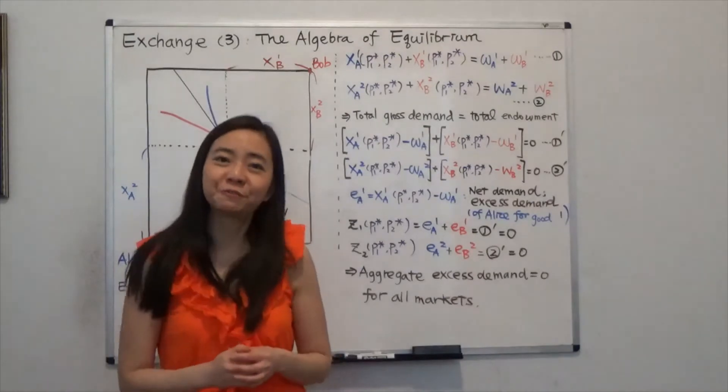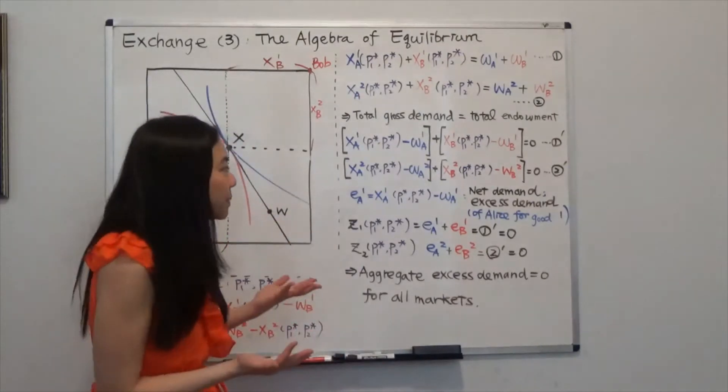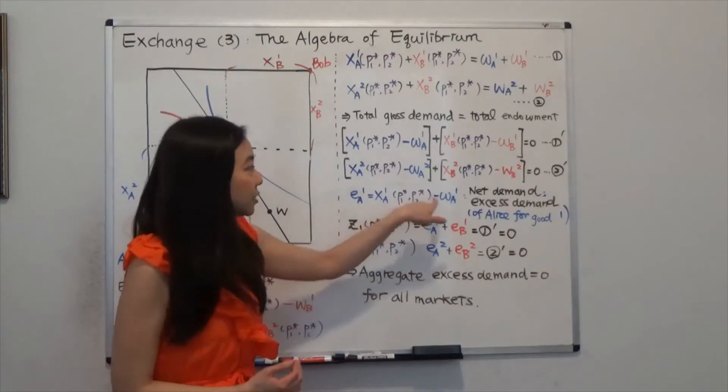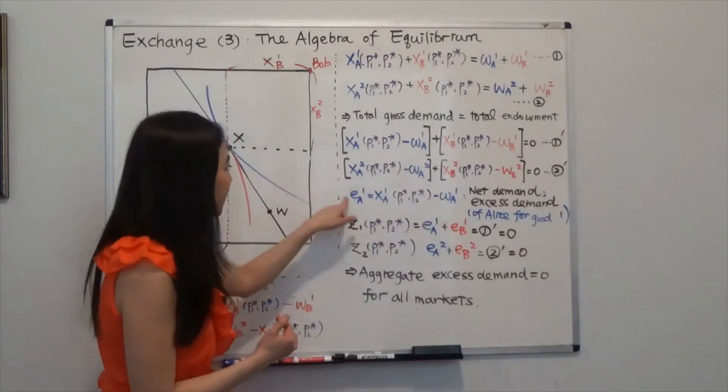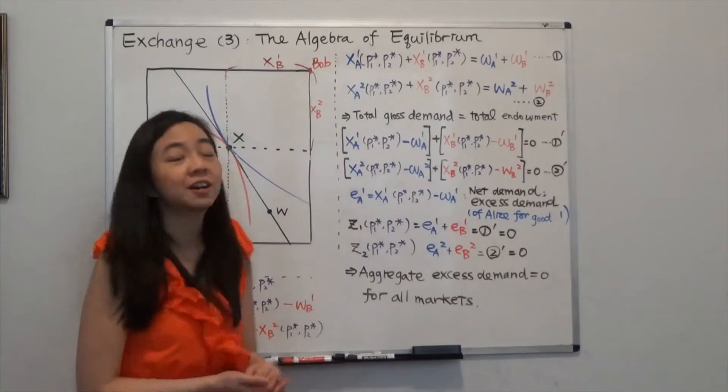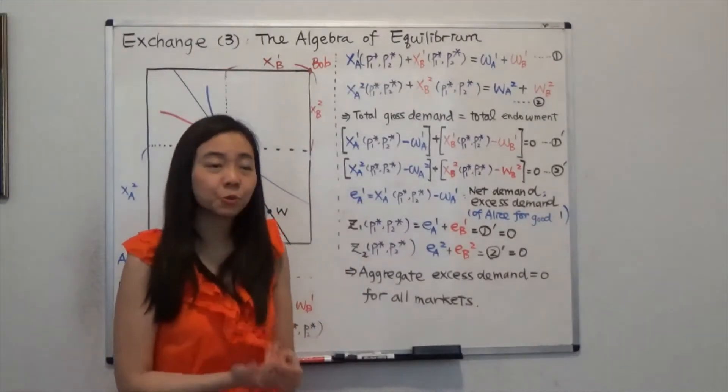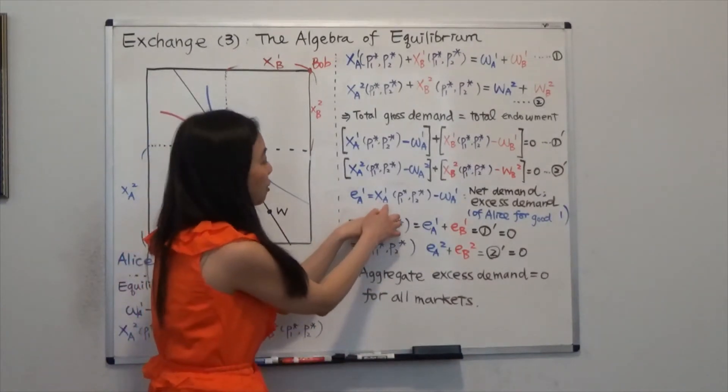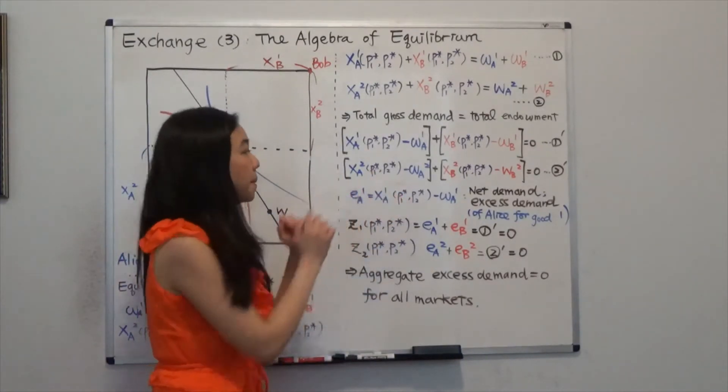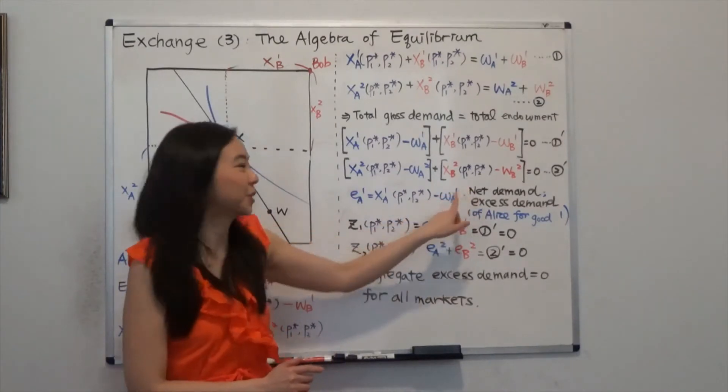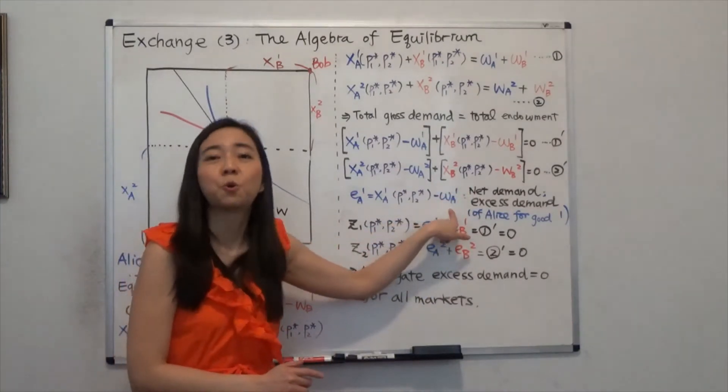And now I'm going to define excess demand or net demand as your final consumption minus your endowment. So for example, EA1 stands for the excess demand or net demand of Alice for good one. And that is equal to the final consumption of Alice for good one minus her initial endowment of good one. We call that the net demand or excess demand.